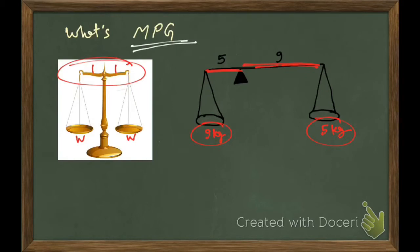If the arm lengths are not equal, and let's say one side the arm length is 5 and another side arm length is 9, then how we can balance this? We simply put the opposite ratio, means 9 units here and 5 units here.